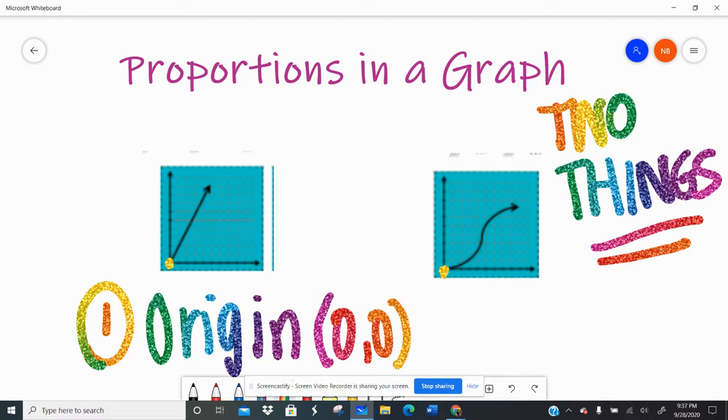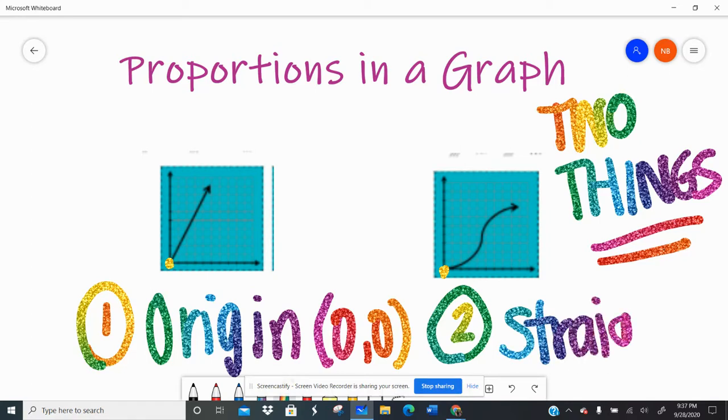Well, both of those start at 0, 0. So number one, checked off. And number two, you have to be a straight line. In order to be proportional, you have to increase at the same rate.